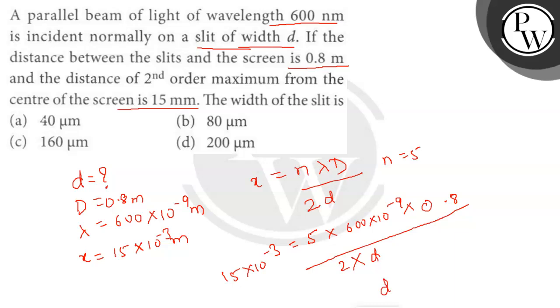From here we can find d equals to 80 into 10 to the power minus 6 meter, that is 80 micrometer.